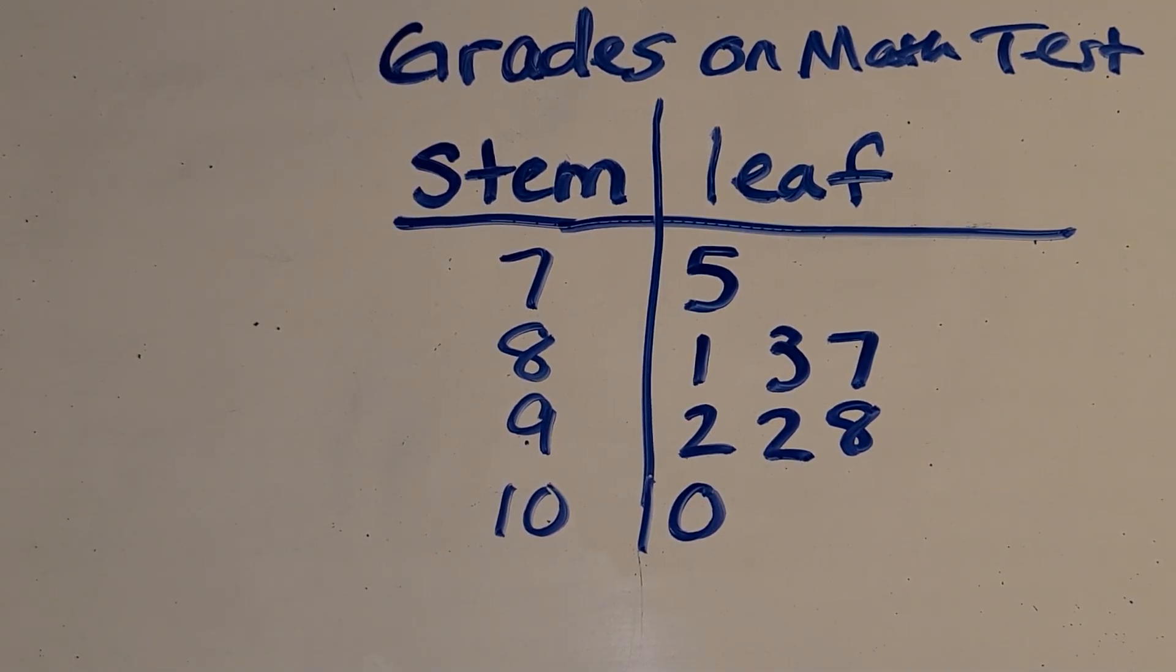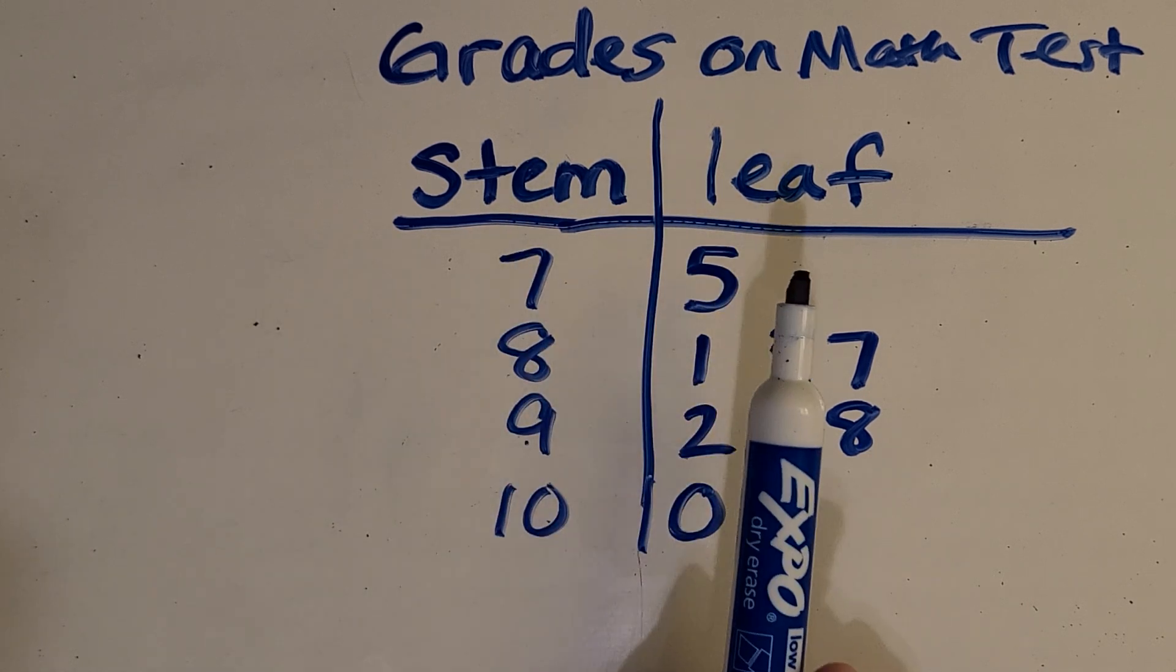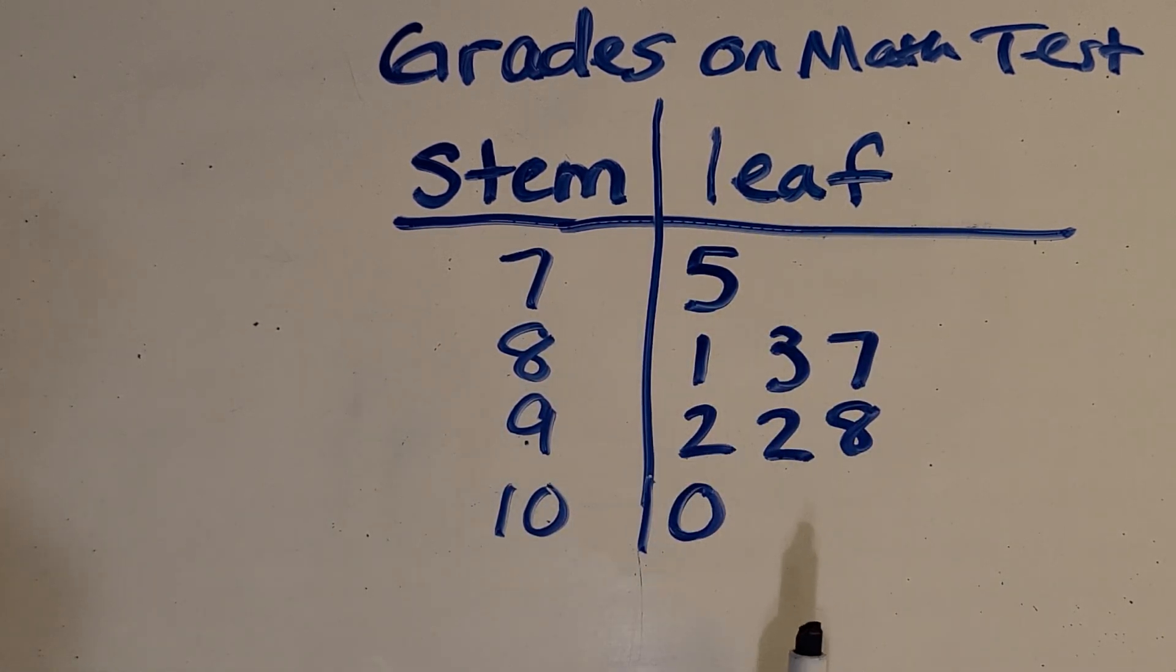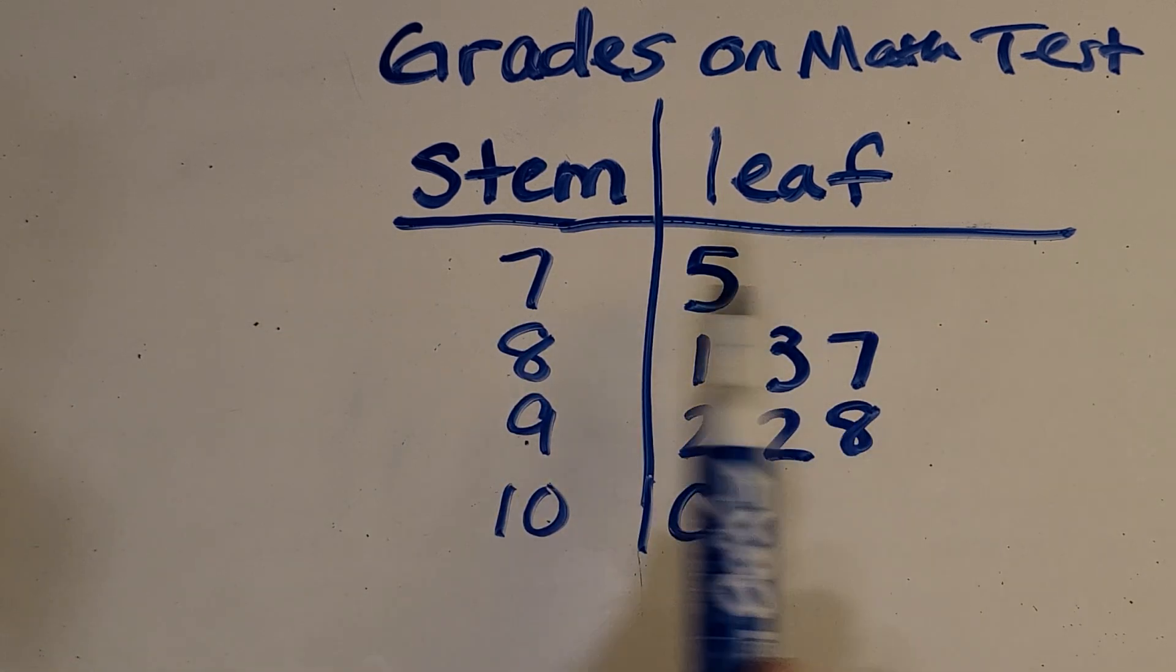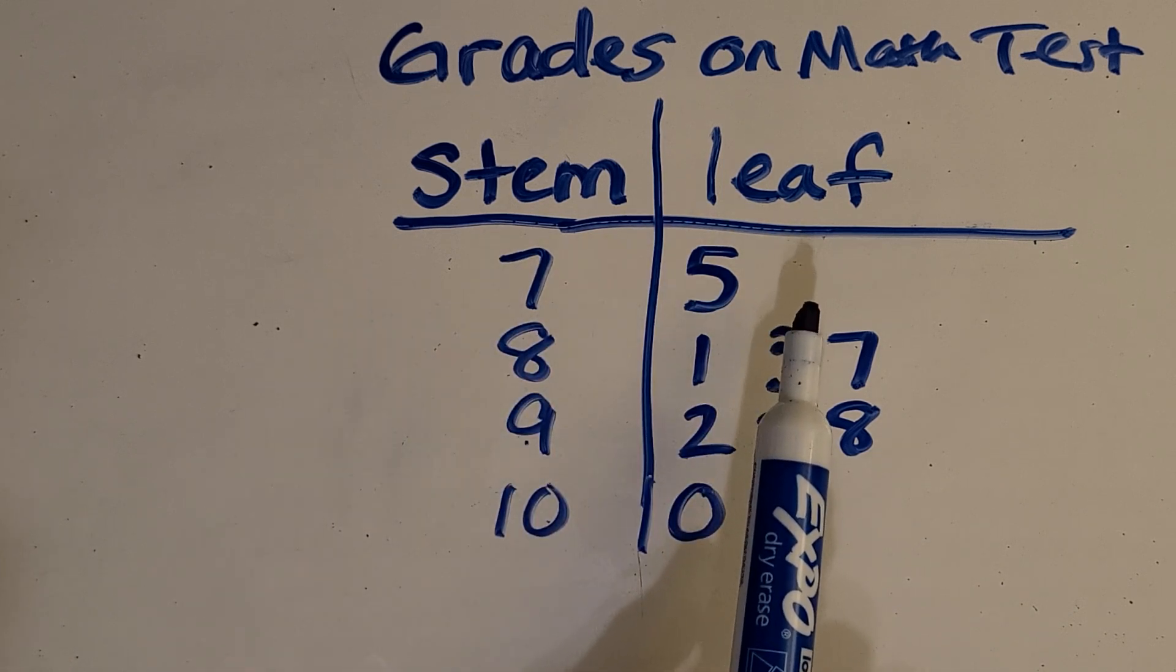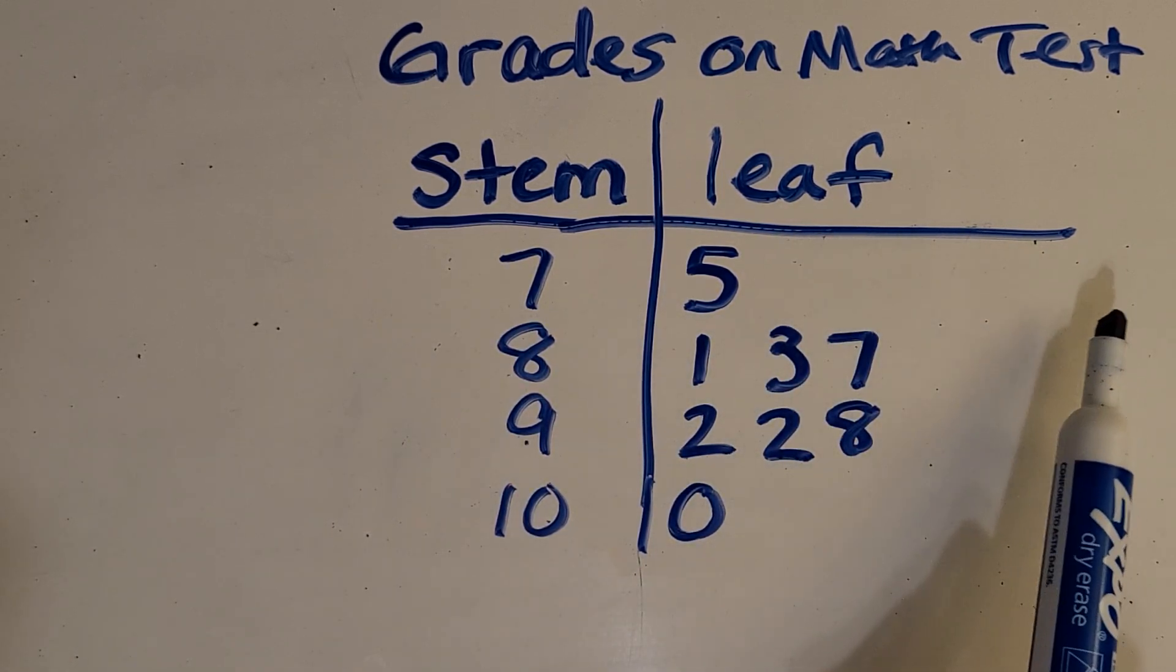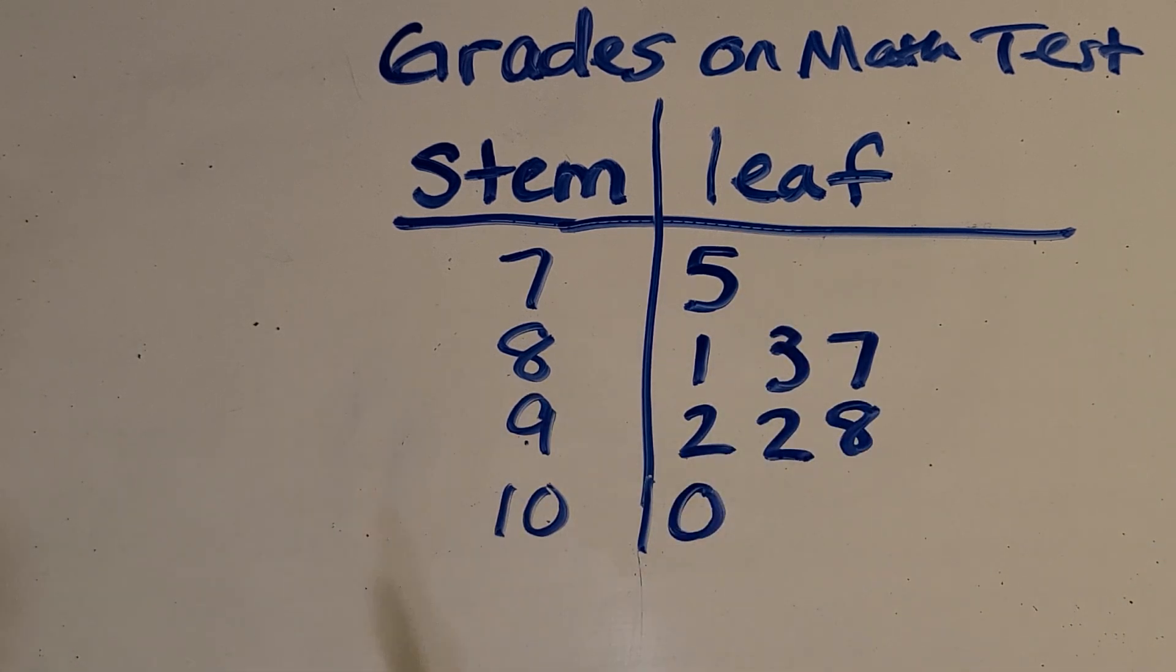Here's our first stem and leaf plot that I want to use to introduce all of these topics. A stem and leaf plot, if you're not too familiar with, is just a way of representing data with place value. The stems in this case are in the tens place. They're representing the tens place because this is grades on a math test. These leaves are going to represent our ones place. For example, I see a 75 in this row. There's no other grades that were in the 70s, because you don't see any other numbers in the leaf side. So there can be as many leaves as there is data points.